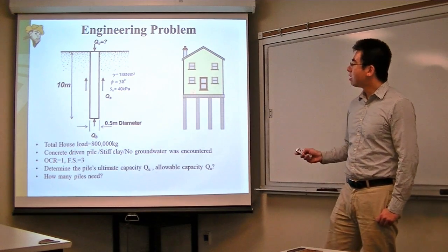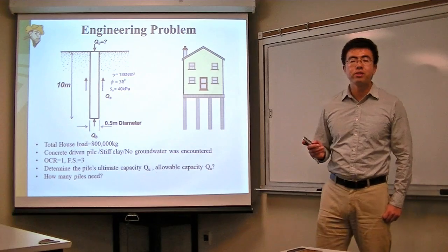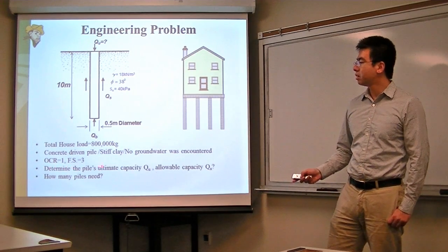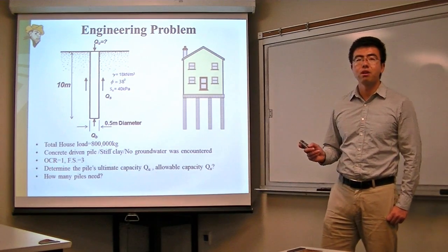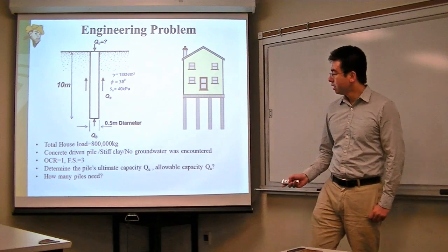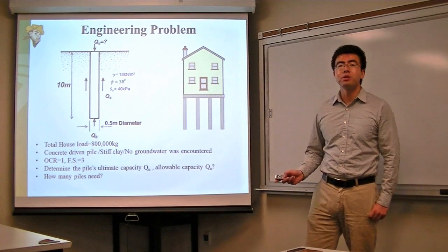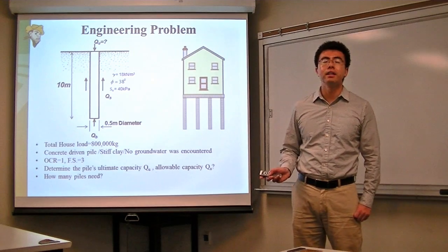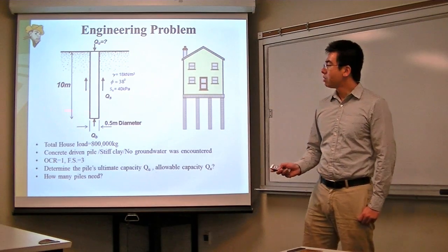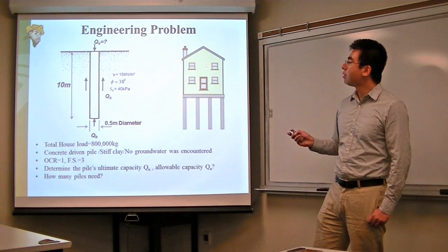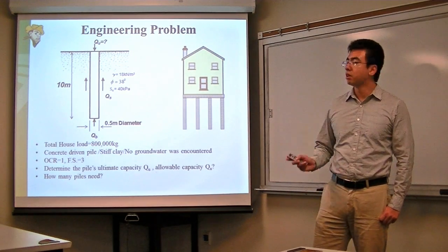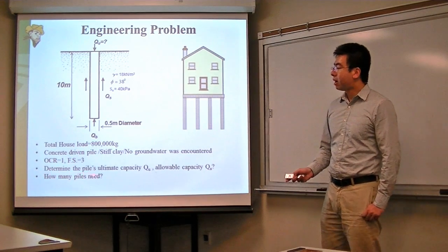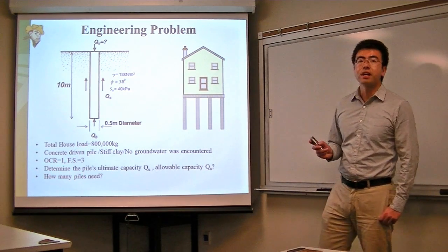Based on all the given information, you are required to determine the pile's ultimate capacity q sub u and the allowable load capacity q sub a. The total weight of the house is also given, and you need to calculate how many piles are required for this design.